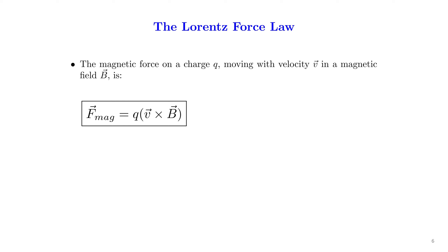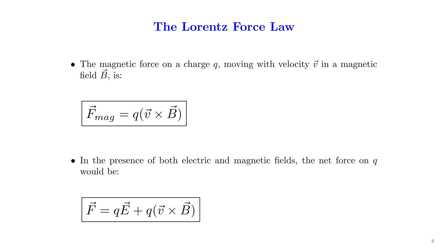The magnetic force on a charge Q, moving with a velocity V in a magnetic field B, is accounted by the Lorentz force law. According to which, the magnetic force is given by Q times V cross B. In the presence of both electric and magnetic fields, the net force on Q would be F equal to QE plus Q times V cross B, where QE denotes the Lorentz force in the presence of electric fields.